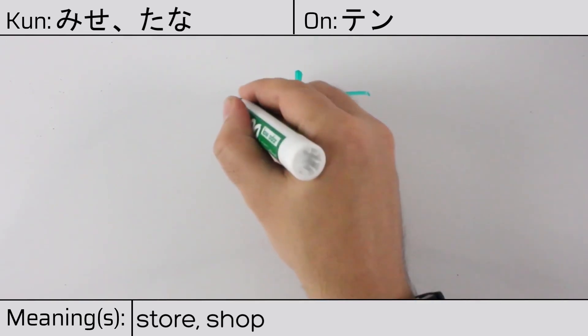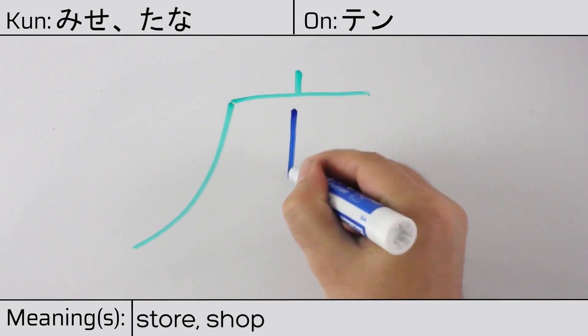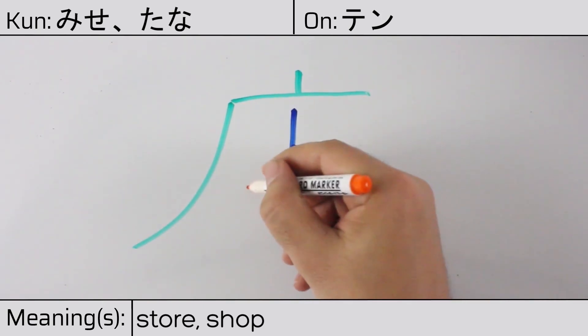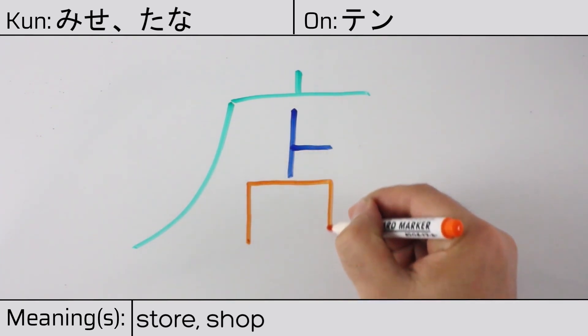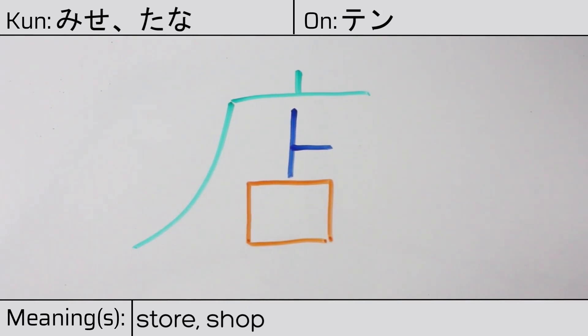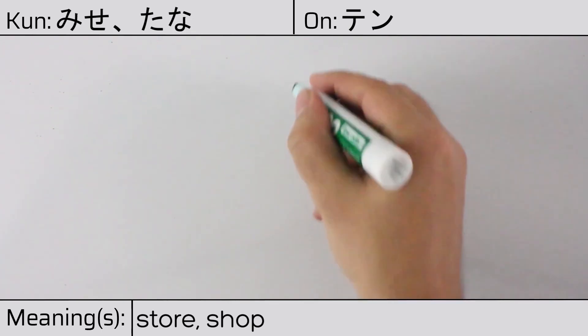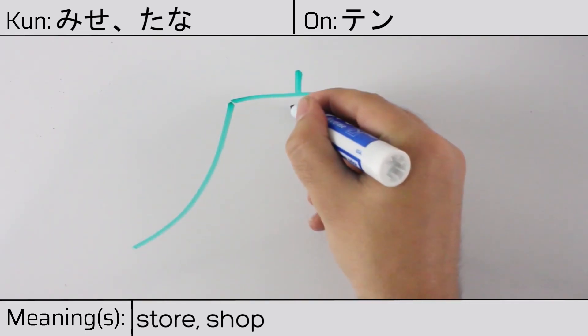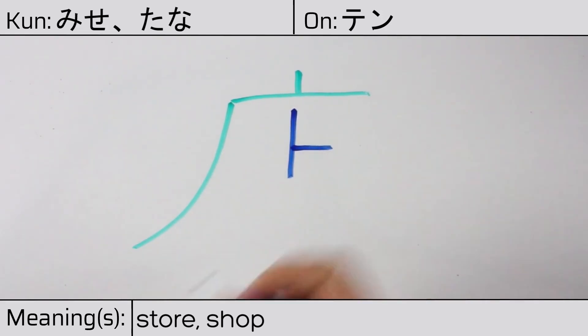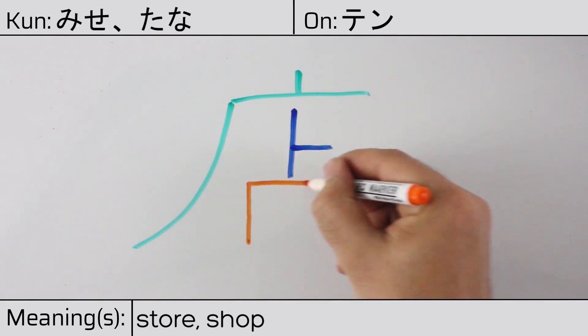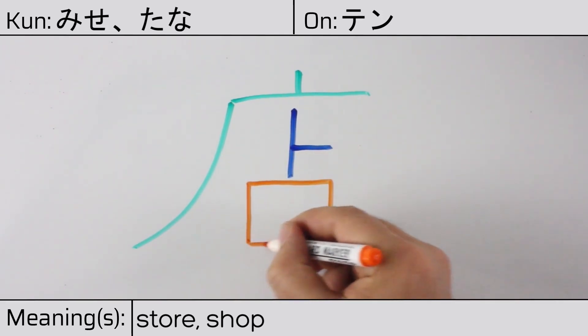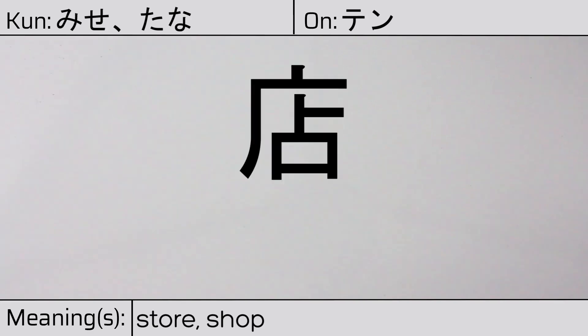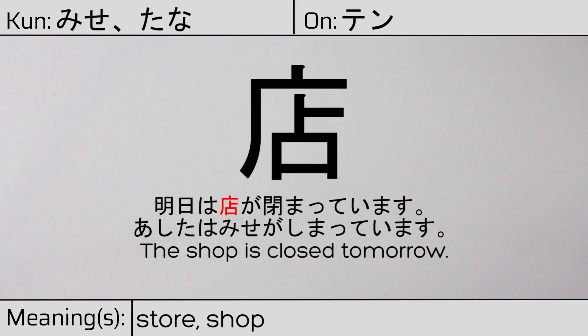This character is made up of the following radicals or parts: house on cliff or dotted cliff radical, katakana to or oracle radical, and finally the mouth radical. You can remember this kanji by the following hint: the most important store is the one of the fortune teller. Our example sentence is: Ashita wa misega shimatte imasu — The shop is closed tomorrow.